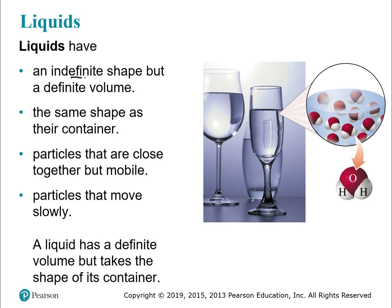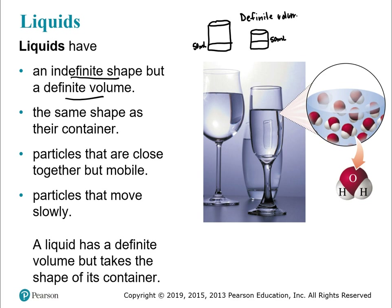A liquid has an indefinite shape but a definite volume. Think about water — you can take it from a pitcher and pour it into a glass, and it takes the shape of whatever container it's in. But if you fill a big beaker to the 50 mL mark and pour it into a smaller beaker, it's still going to be 50 mL — definite volume, but different shape. The particles in liquid are close together but still moving around slowly.